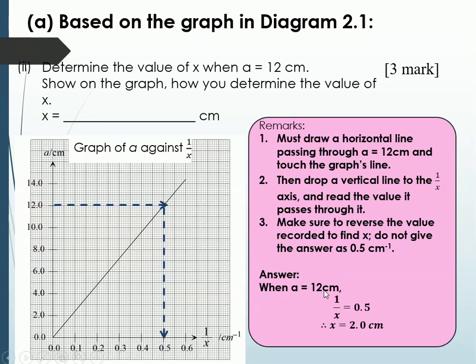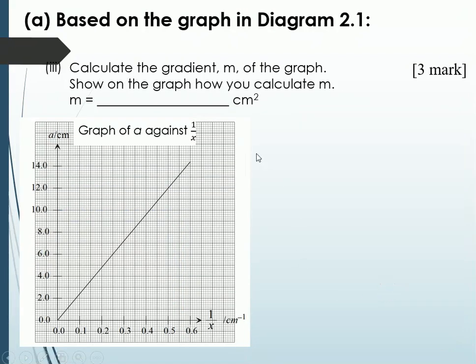Do not give the answer as 0.5 cm. You will be wrong. So, your answer should be, when a is 12 cm, 1 over x is 0.5. This is from the graph. Therefore, x is 2.0 cm. You do not need to change from cm to m. Just leave the answer in cm. So, this is a 3 marks question. First mark is supposed to be on the graph. Second mark is for your value of 0.5. And the third mark is for your final answer with the unit.